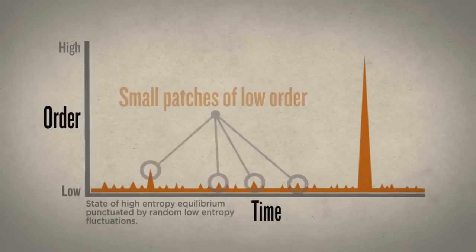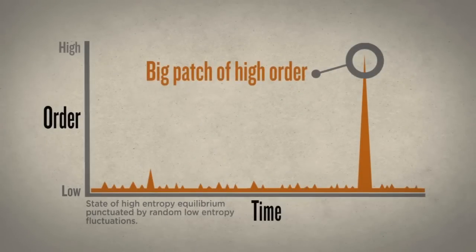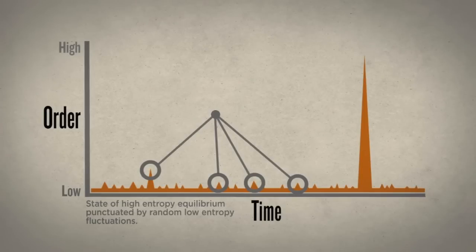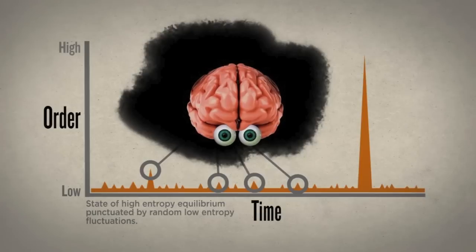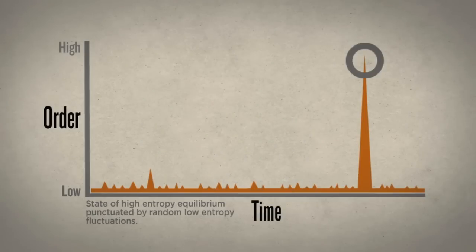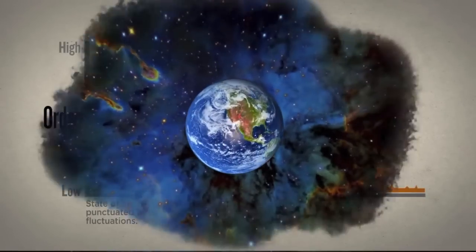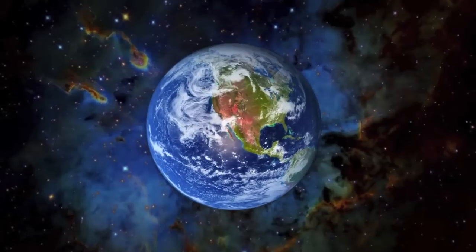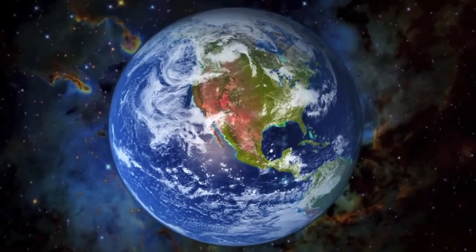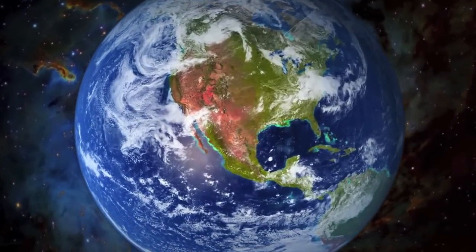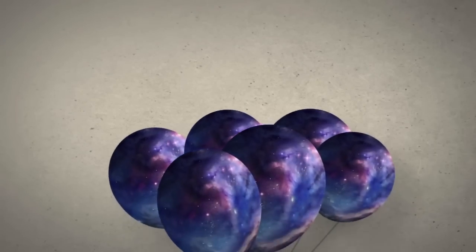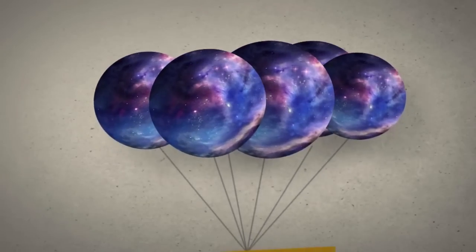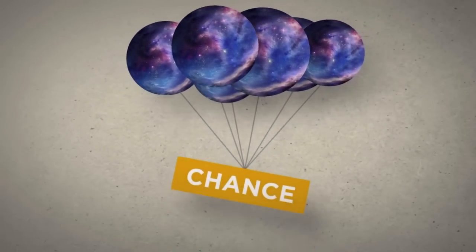Furthermore, small patches of order are far more probable than big ones. So the most probable observable universe would be a small one inhabited by a single, simple observer. But what we actually observe is the very thing that we should least expect: a vast, spectacularly complex, highly ordered universe inhabited by billions of other observers. So even if the multiverse existed, which is a moot point, it wouldn't do anything to explain the fine-tuning.